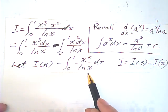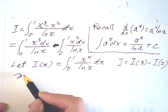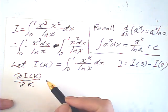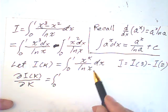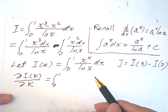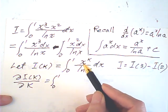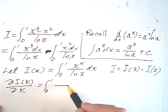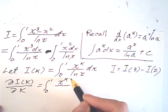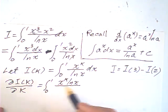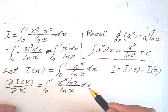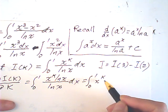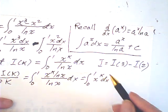Now we take the partial derivative of i(k) with respect to k. In this case, k is the variable and x is just a constant. The derivative of x^k with respect to k is x^k · ln(x). So the ln(x) and the 1/ln(x) cancel, and the partial derivative of i(k) is equal to the integral from 0 to 1 of x^k dx.